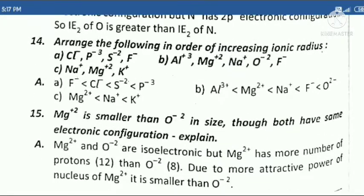Fourteenth question: Arrange the following in order of increasing ionic radius. Fifteenth question: Mg²⁺ is smaller than O²⁻ in size, though both have the same electronic configuration. Explain.